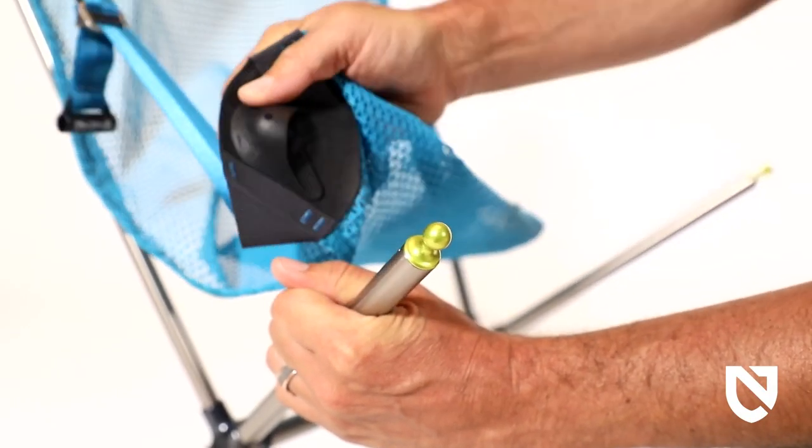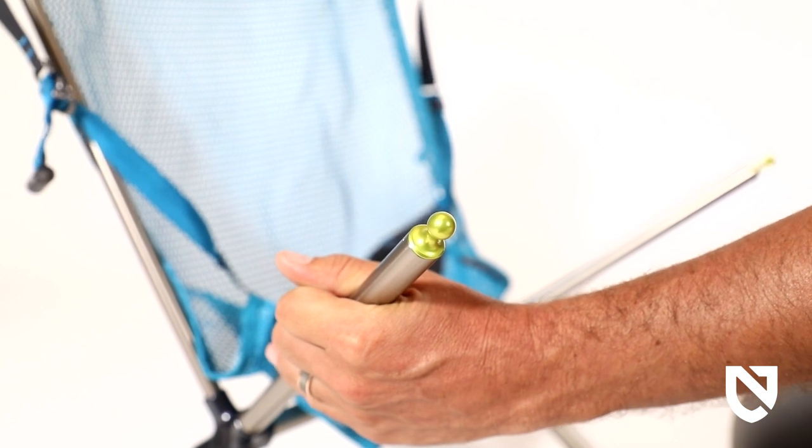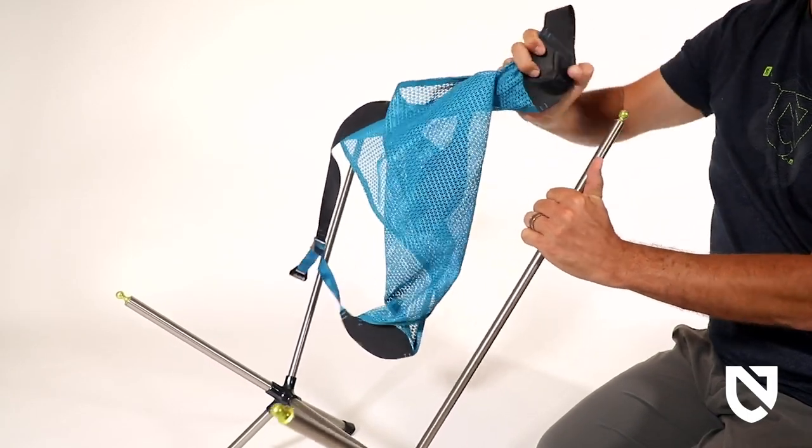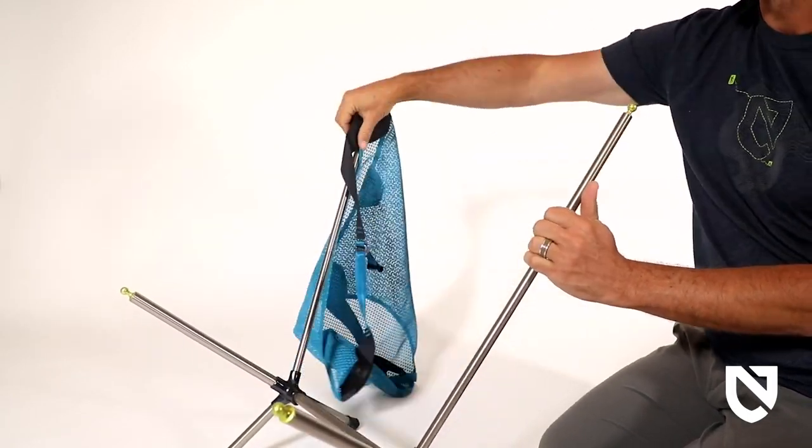Repeat this motion on the other side to remove the other lower connection, and then remove the remaining top corner connections as they will easily roll off the pole ends.